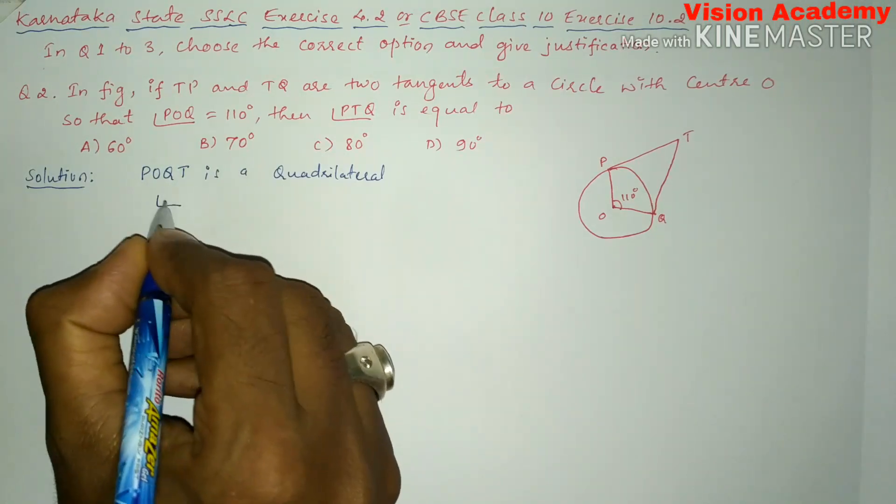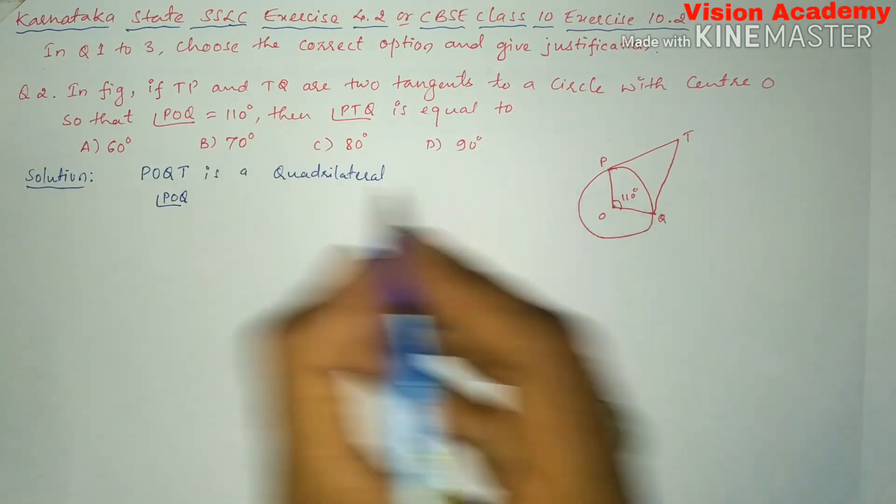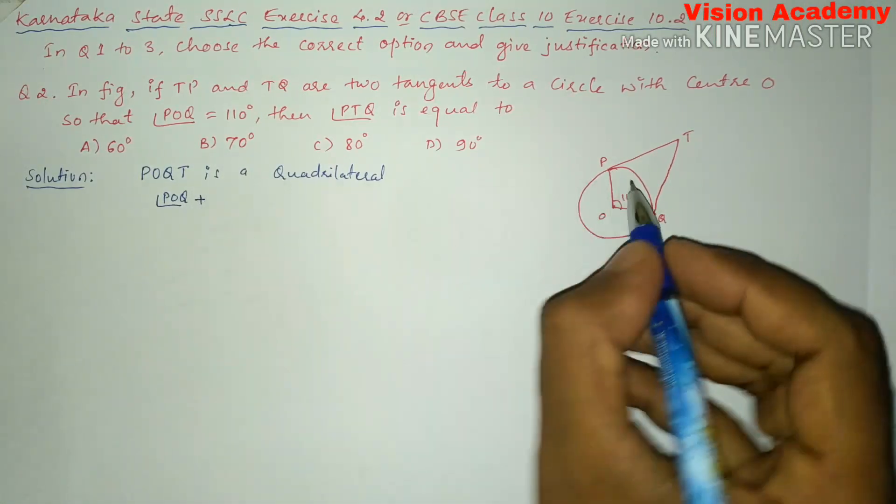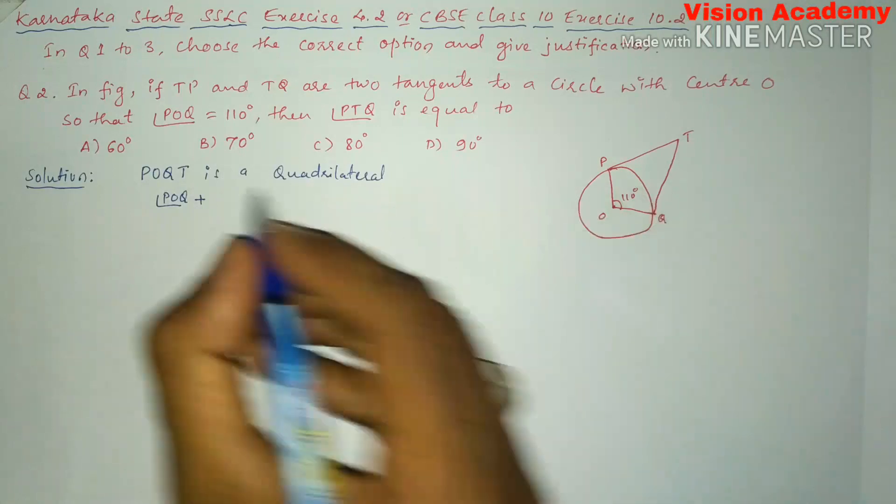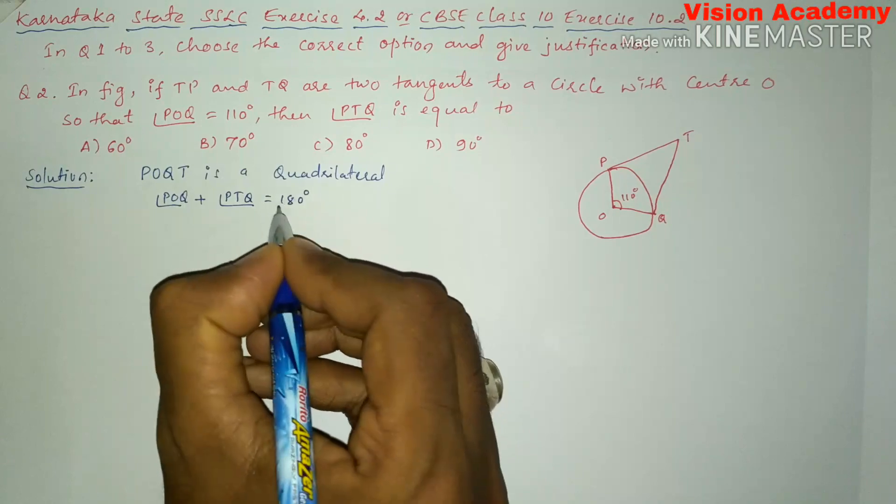angle POQ plus angle PTQ is equal to 180 degrees.